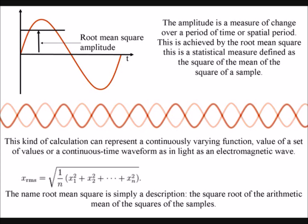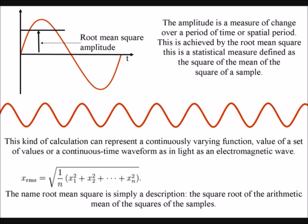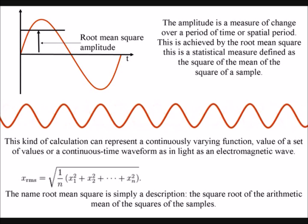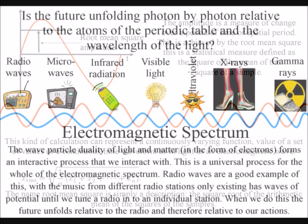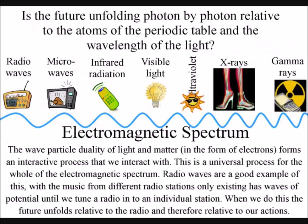The name root mean square is simply a description: the square root of the arithmetic mean of the squares of the samples. This kind of calculation can represent a continuously varying function, value of a set of values, or a continuous-time waveform as in light as an electromagnetic wave.